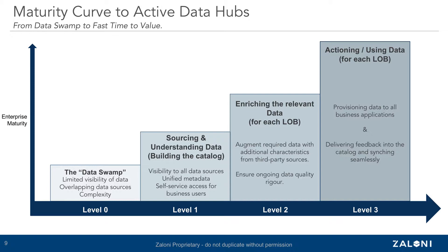Once the catalog is built, the next step is to allow end users of different skill levels or personas to augment or transform the data with additional characteristics — maybe aggregated or derived columns or joining it with a third-party data source. You may have a user that's more technical and interested in building data pipelines who wants to do complex joins, going back to their days in the enterprise data warehouse. And that's great — you want to be able to support that.